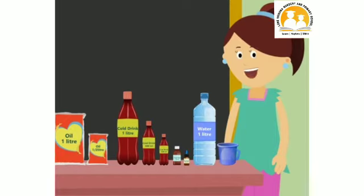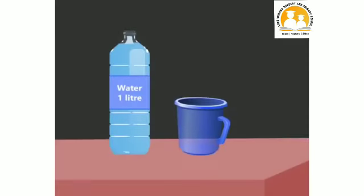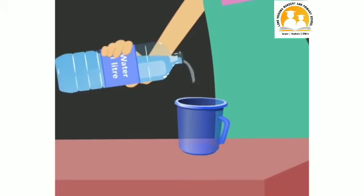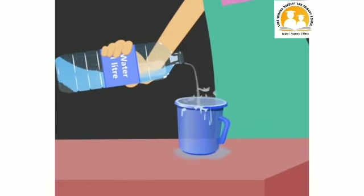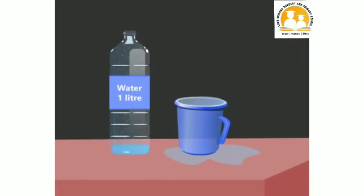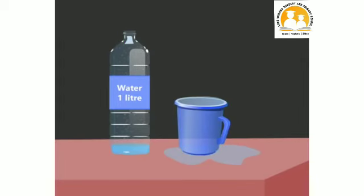To understand the term capacity, I have taken a water bottle with water and an empty jar or jug. Let us pour the water from the water bottle into the jug. It has filled the jug and the water overflows. That means the capacity of the water bottle is more and the capacity of the jug is less.